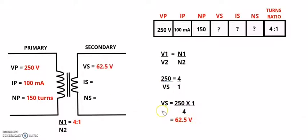Now on your sketch, put in that secondary voltage value of 62.5 volts, because you can use it to calculate the next unknown.